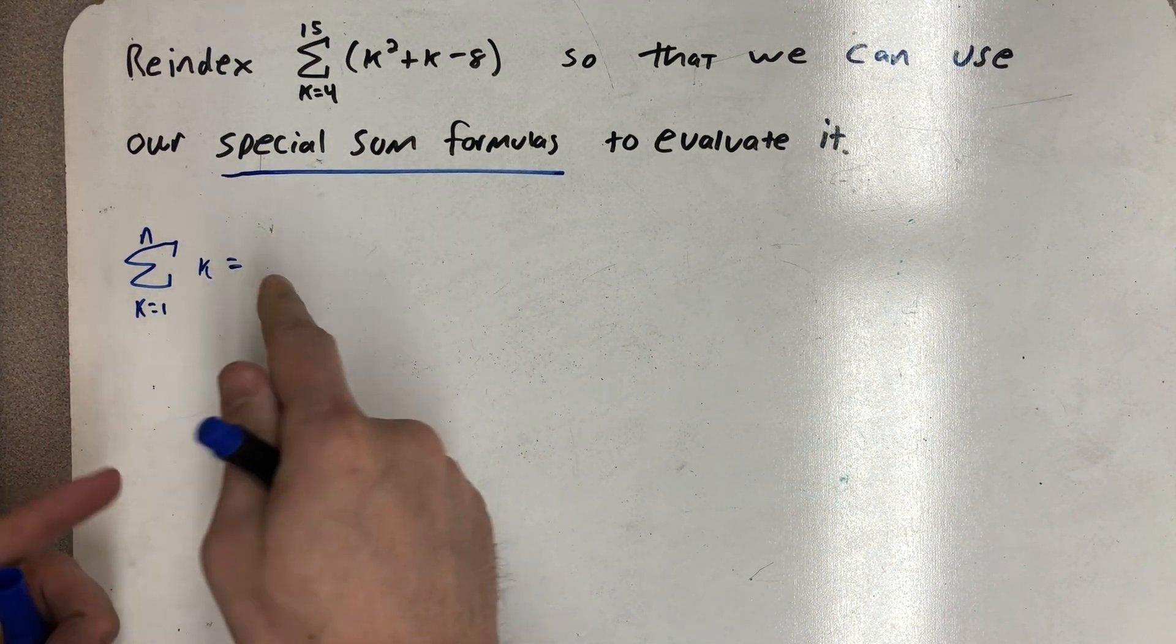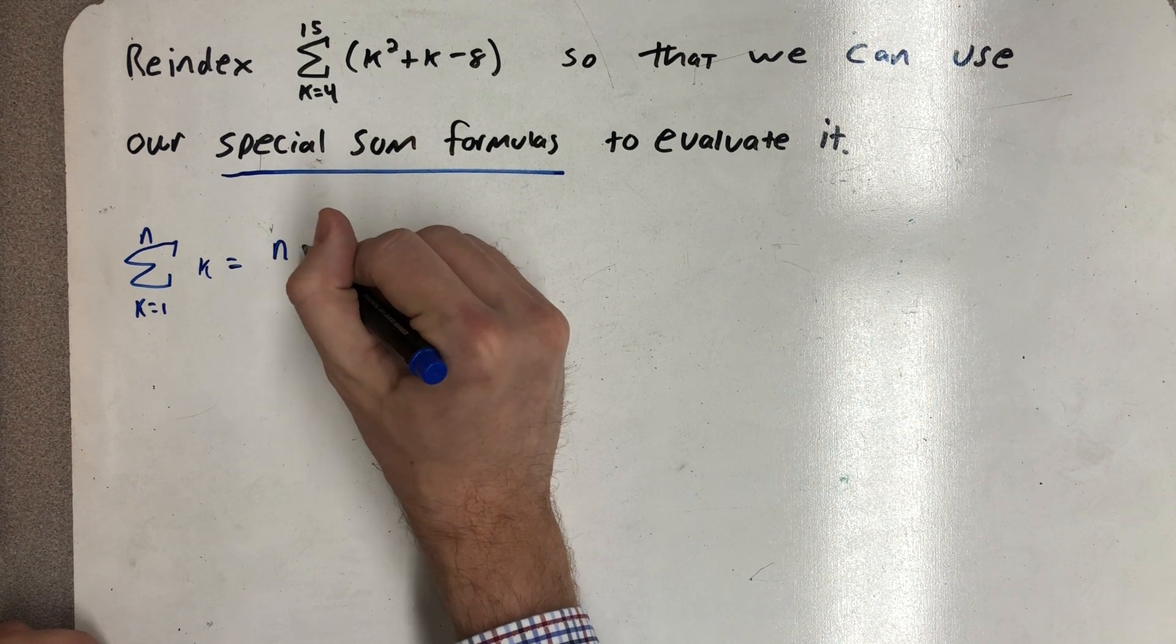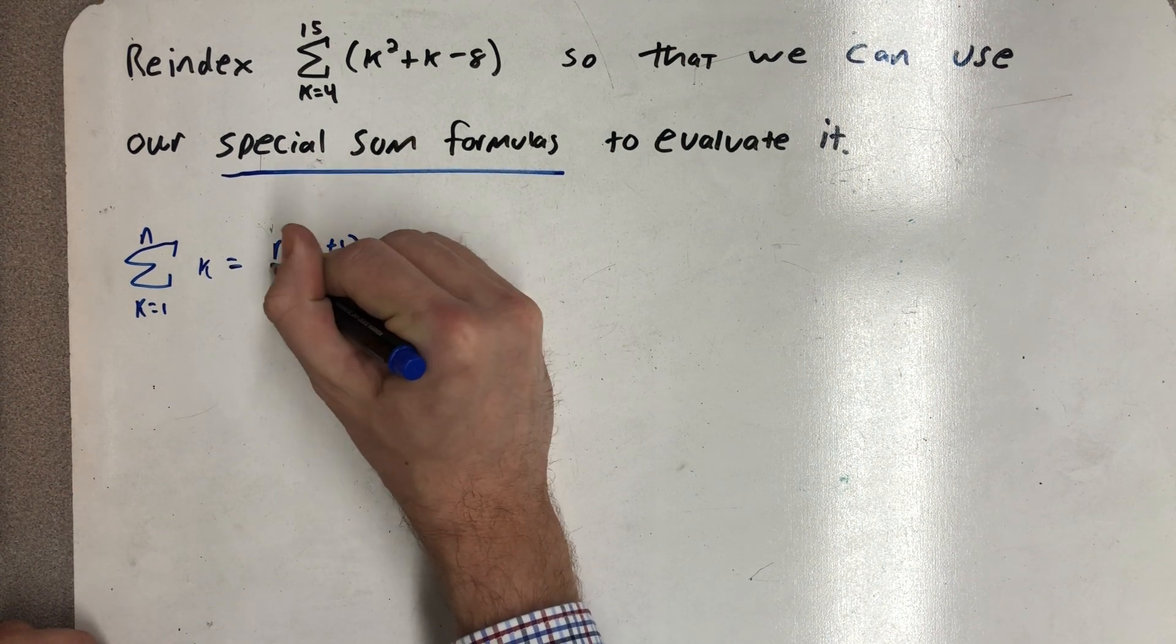So the sum of the first n whole numbers is n times n plus 1 all over 2.